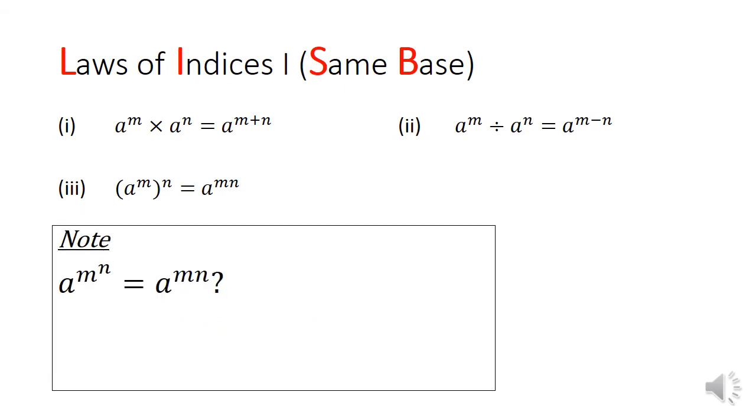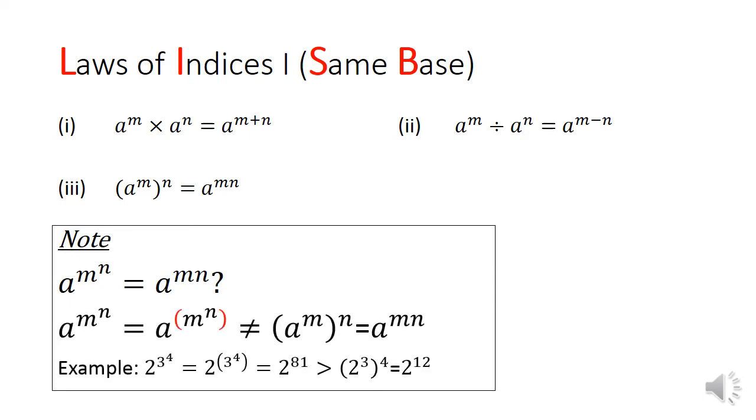An important consideration here is that when there are no brackets written, would the third law still apply? It turns out when unwritten, there is an implicit bracket acting within the power. For example, if we were to take 2 to the power of 3 to the power of 4, this would give us 2 to the power of 81 instead of 2 to the power of 12.